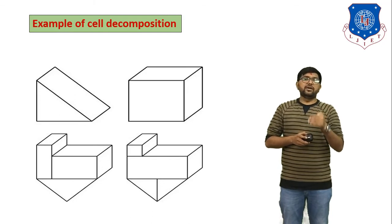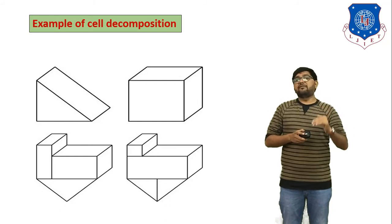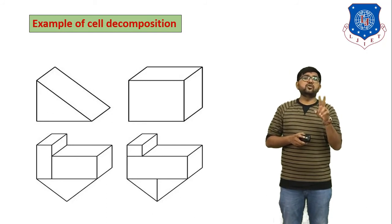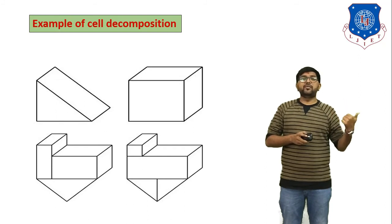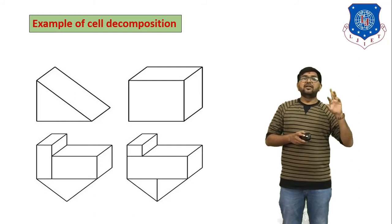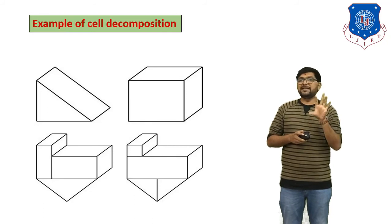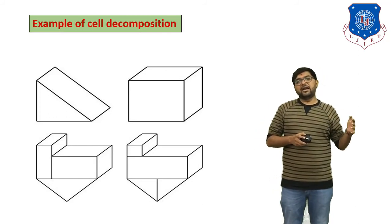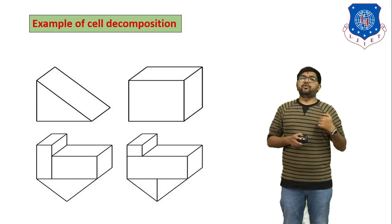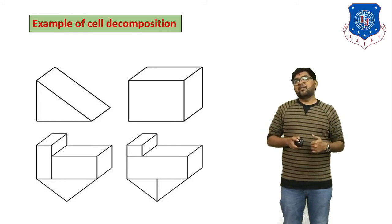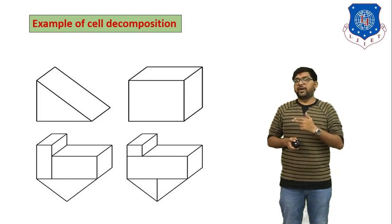We have a total of 6 to 7 methods and each is most important. In today's session we discussed three methods. First, sweeping — covering linear sweeping and rotational sweeping. Second, primitive instancing — which has two types: generic primitives and instance primitives, depending on the quantity of the object. Third, cell decomposition — using the union/gluing operation and combining two objects. In the next session we will discuss CSG, also known as C-Rep — constructive solid geometry. Thank you.